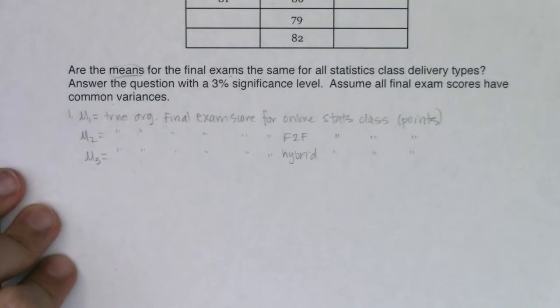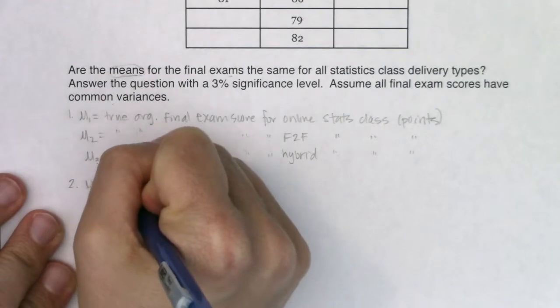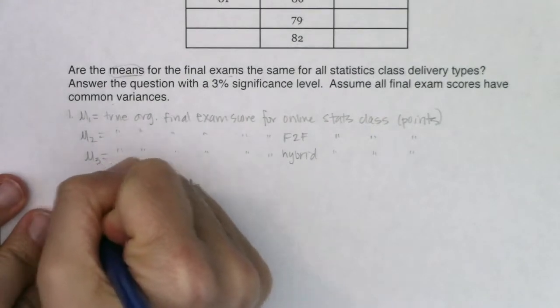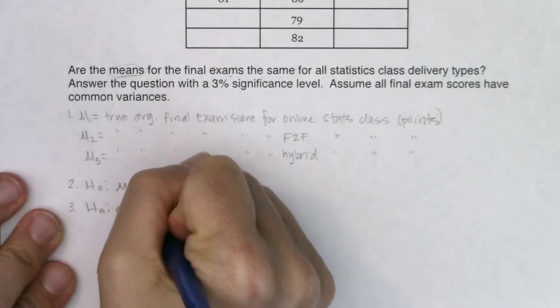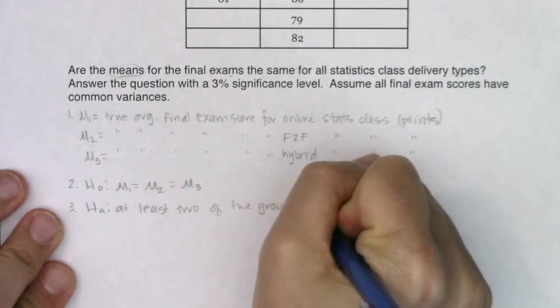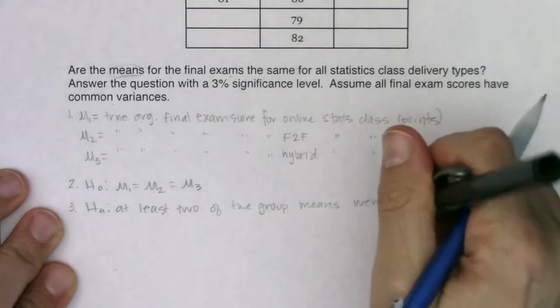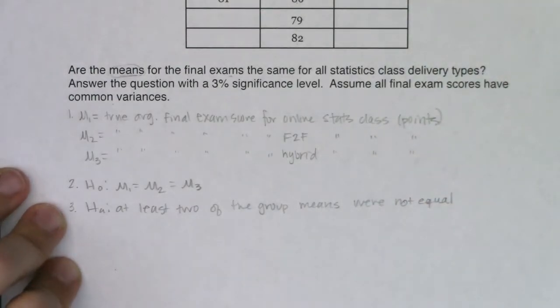So step one would be define some parameters. I'm going to define some mu's because I'm in mean land. So mu one would be the true average final exam score. We'll go for the online stats class. And I'm going to just make this assumption that it's in points. Mu two will go with the face-to-face. So the true average final exam score for face-to-face. I'm going to write F to F because I am that lazy and don't want to write new words. And mu sub three will go with the true average final exam score for the hybrid students.